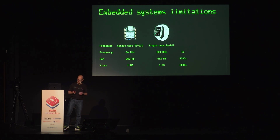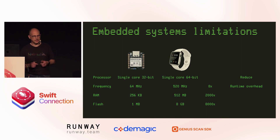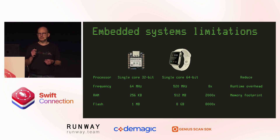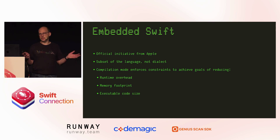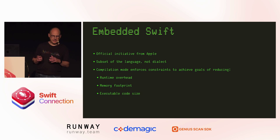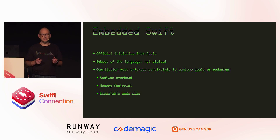We see that if you want to bring Swift into the embedded world, we really need to reduce everything that's overhead at runtime — the memory footprint and the code size. Embedded Swift is Apple's official answer to this. It is basically Swift, but with limitations. So it's a subset, not a dialect. It adds a compilation mode that adds some constraints in order to achieve that reduction goal.